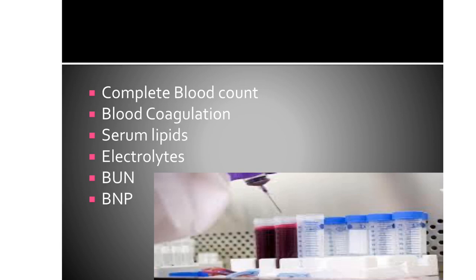Next are electrolytes, composed of potassium, sodium, calcium, phosphorus, and magnesium. For potassium, hypokalemia is defined as less than 3.5 milliequivalents per liter. Hypokalemia causes increased cardiac electrical instability, ventricular dysrhythmia, and increased risk of digoxin toxicity. On the ECG, hypokalemia shows a flattening and inversion of the T-wave.